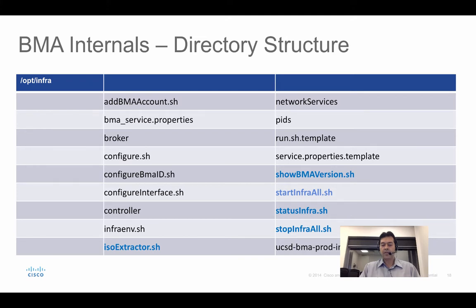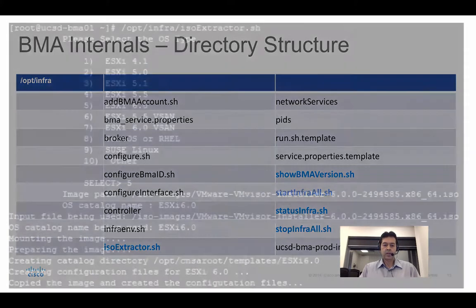There are also scripts available in the opt-infra folder, though you'll rarely need them unless troubleshooting: stop-infra-all.sh to stop all BMA services, start-infra-all.sh to start all services, and show BMA version.